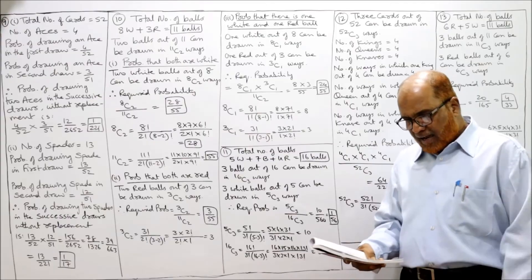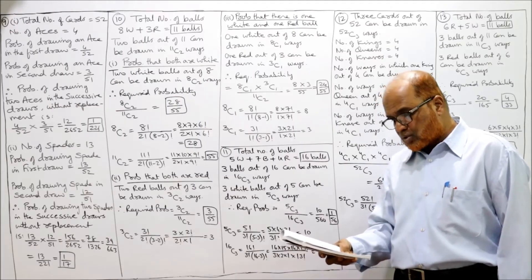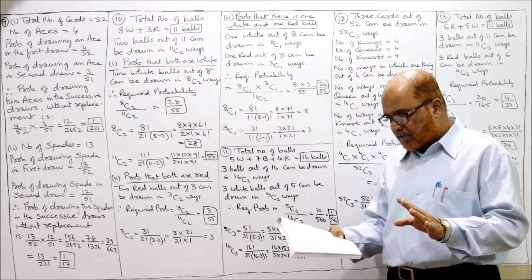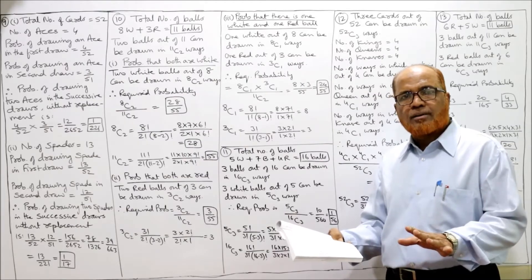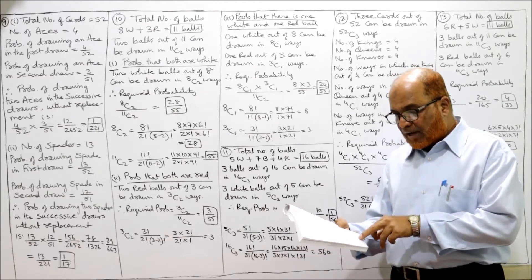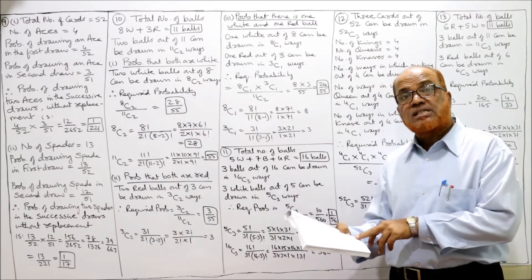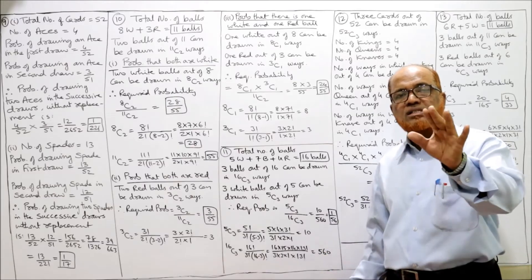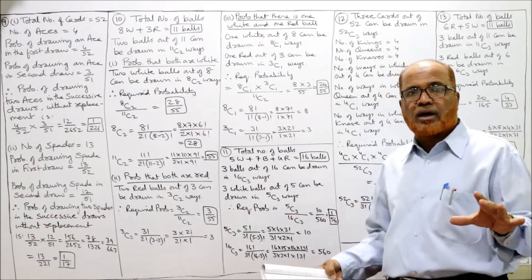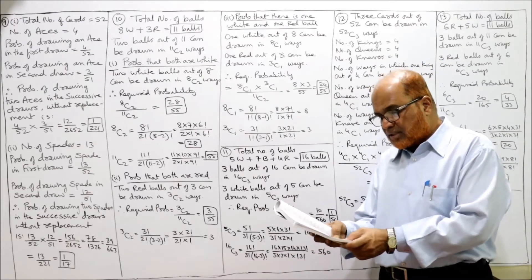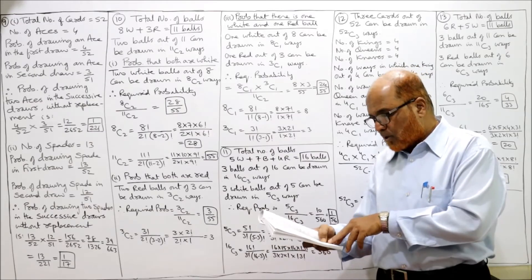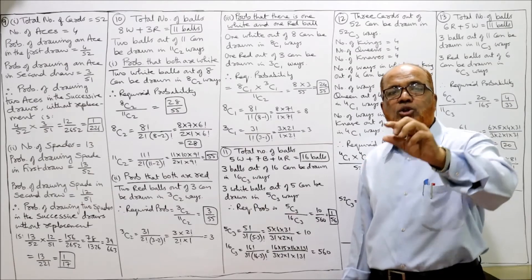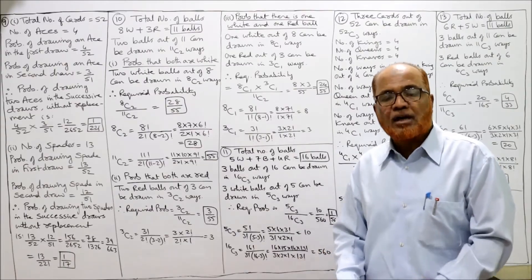Problem number 11: A bag contains 5 white, 7 black, and 4 red balls — total 16 balls. Three balls are drawn at random. Find the probability that all 3 balls are white. Three balls out of 16 can be drawn in 16C3 ways. Since we want all 3 balls to be white, and there are 5 white balls, 3 white balls out of 5 can be drawn in 5C3 ways. Required probability = 5C3 / 16C3.